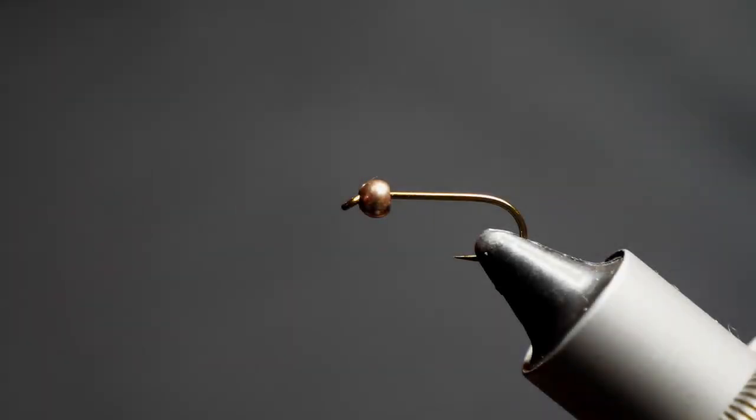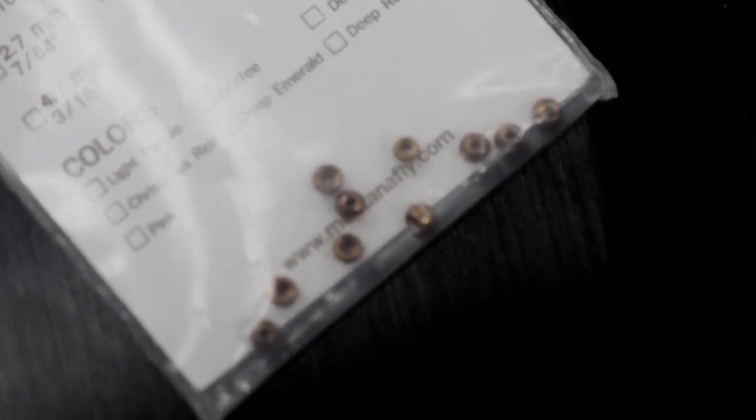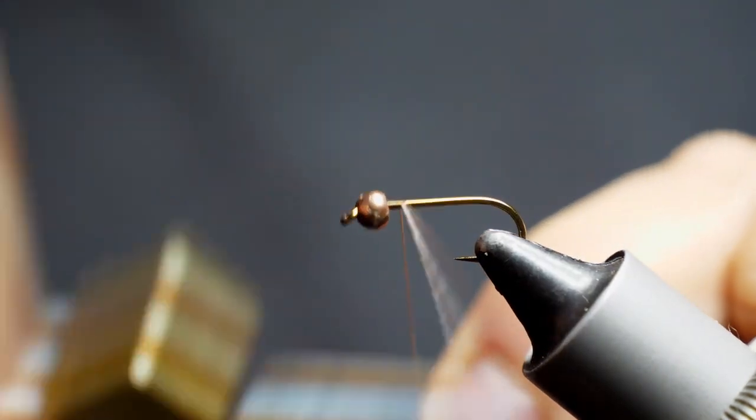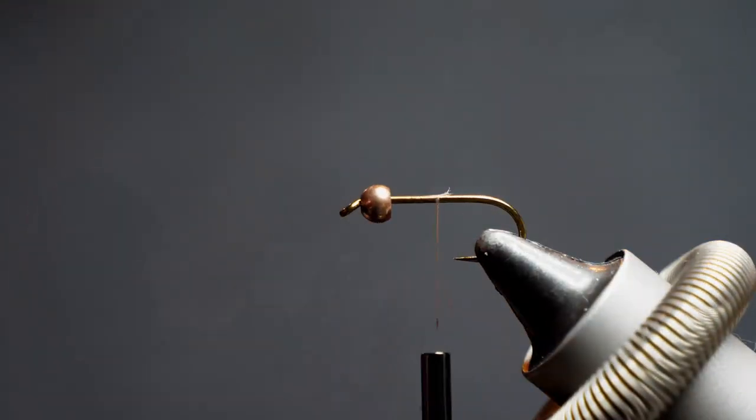Now you can see we've got the hook here with the bead on it already. Again, I like MFC's tungsten lucent beads, but you can use whatever you like. We'll wrap on our thread here and cut off the tag end.